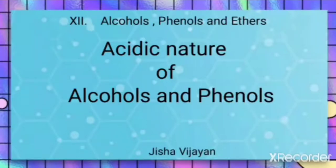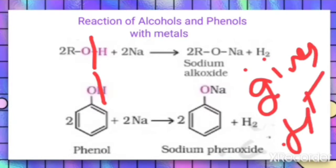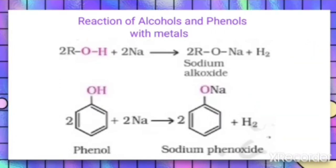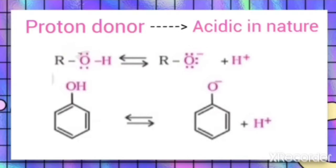Let us discuss the acidic nature of alcohols and phenols. Alcohols and phenols react with metals to give sodium alkoxide and sodium phenoxide. During this reaction there is a cleavage of the O-H bond, which means it gives out H+ ions. Since alcohols and phenols donate H+ ions, they are proton donors and therefore have acidic character.